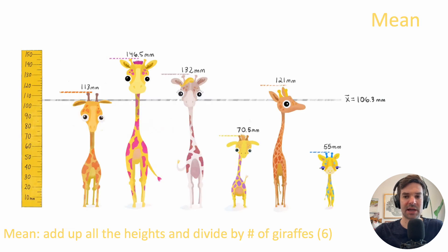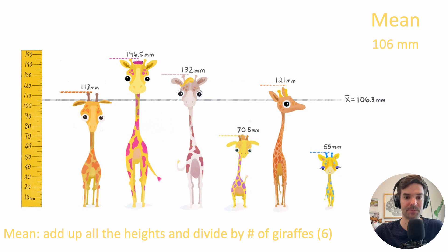Here's an example of mean. This is from a great website that walks through tiny giraffes. You can see the height of each individual giraffe and calculate a mean. You can pause here to look at the formula at the bottom. The mean is 106 millimeters.